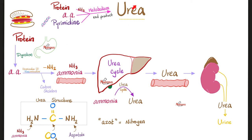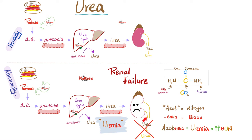Normally, urea is the metabolic end product of protein metabolism, amino acid metabolism, and pyrimidine metabolism. The liver makes urea from ammonia, which comes from metabolism of proteins and amino acids. When the liver converts ammonia into urea in the urea cycle, you have urea in the blood, and the kidney should get rid of it. But in kidney failure, the kidney cannot excrete that urea, so all of it piles up in the blood — this is called uremia.